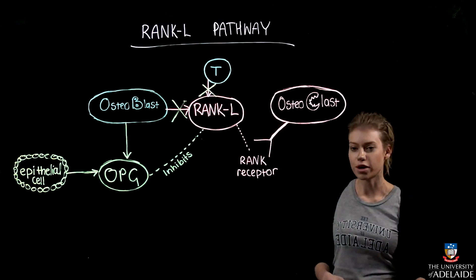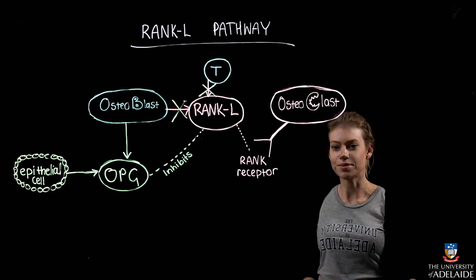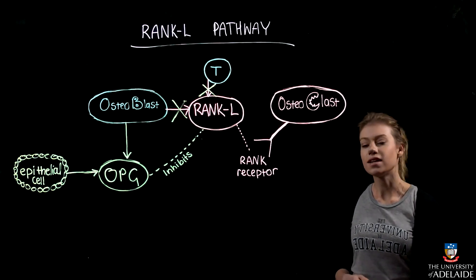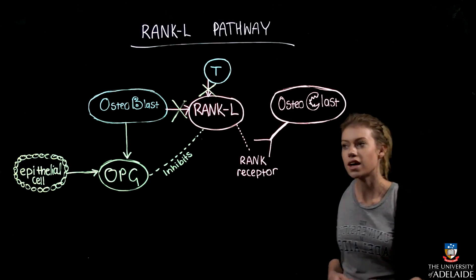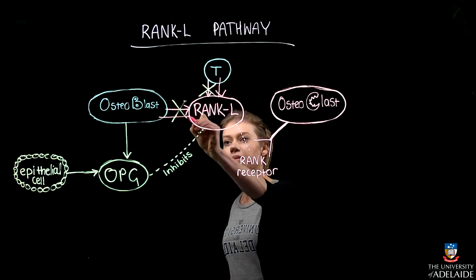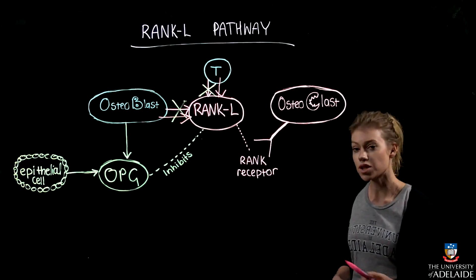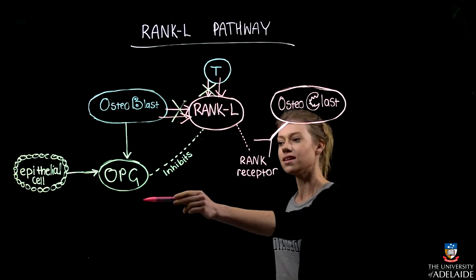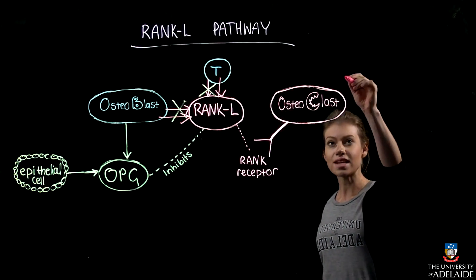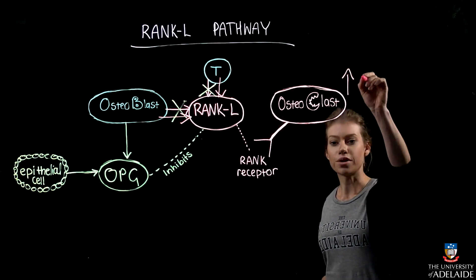This is the normal process for regulating bone resorption. However, if there is an increased influx of RANKL expressed by T cells and osteoblasts, it overwhelms the OPG, causing increased osteoclast activity, which leads to bone loss.